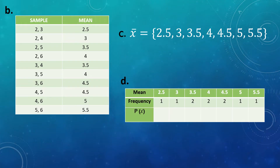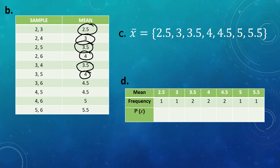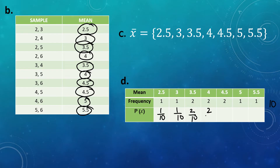Now we count how many times each mean appears. We have: one 2.5, one 3, two 3.5s, two 4s, two 4.5s, one 5, and one 5.5. So the frequencies are 1, 1, 2, 2, 2, 1, 1 — with a total frequency of 10. To find the probability, we use frequency over total: 1/10, 1/10, 2/10, 2/10, 2/10, 1/10, and 1/10.